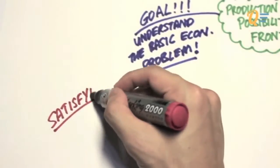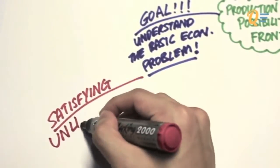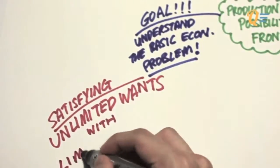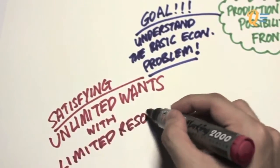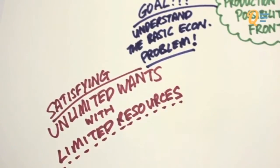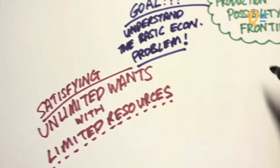In the basic economic problem, there are two aspects. We are trying to satisfy an unlimited amount of wants from society with a limited amount of resources that society has. The two aspects to this are wants as well as resources.